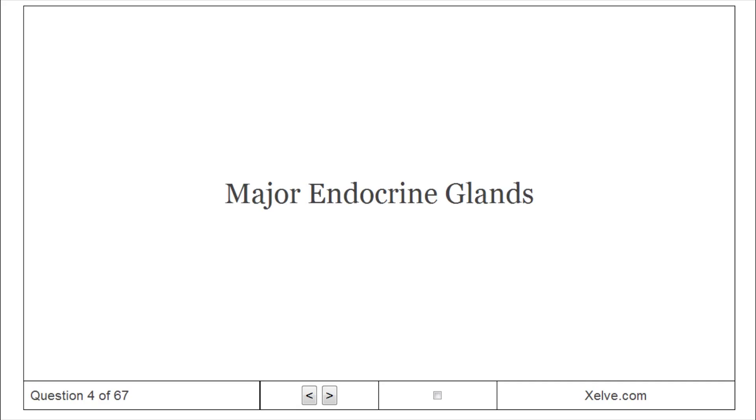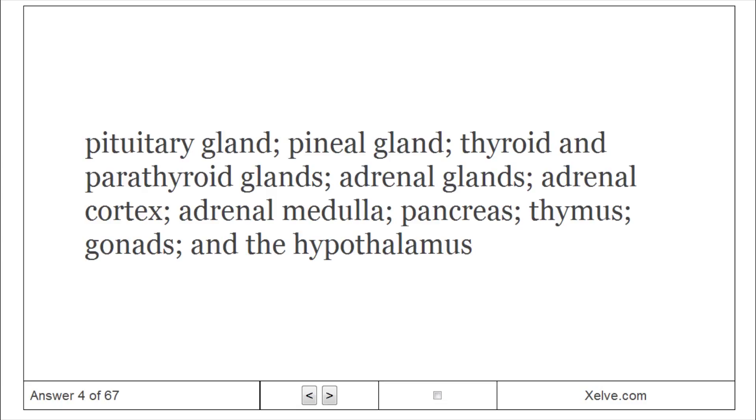Major endocrine glands: pituitary gland, pineal gland, thyroid and parathyroid glands, adrenal glands, adrenal cortex, adrenal medulla, pancreas, thymus, gonads, and the hypothalamus.